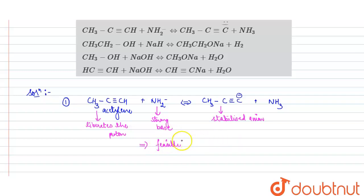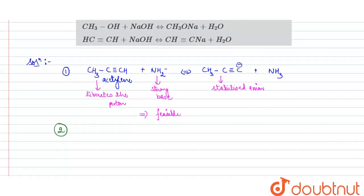So this is definitely not our answer because we have to check for the reaction which will not be feasible. So in a similar manner, let us see the reaction given in second option. Here we have CH3 CH2OH reacting with NaOH, and then on the product side we have CH3 CH2ONa plus H2.